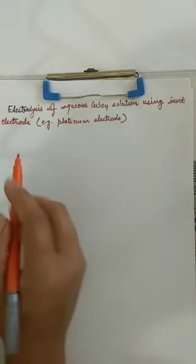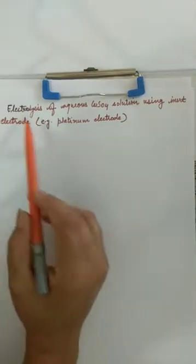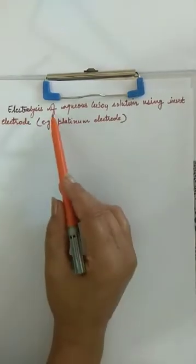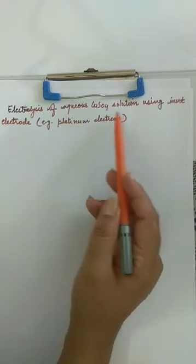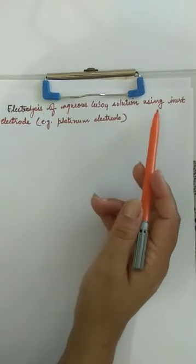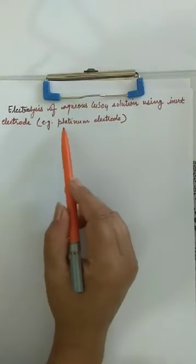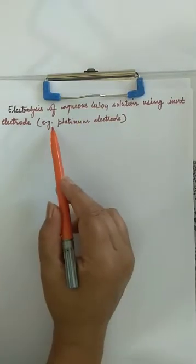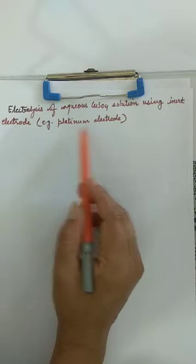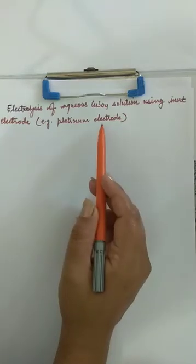Good morning students. Today we will start with electrolysis of aqueous copper sulfate solution using inert electrode. For example, platinum electrode.